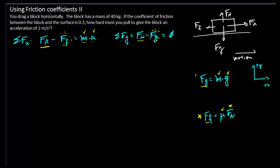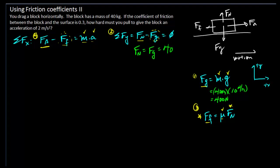So in this case, I'm going to start with my gravitational force equation, then move to finding my normal force using Newton's second law in the y direction. Our gravitational force is going to be 40 kilograms times our constant of 10 Newtons per kilogram, which gives a weight of 400 Newtons. So in our y direction, our normal force is going to equal our gravitational force, which is 400 Newtons.